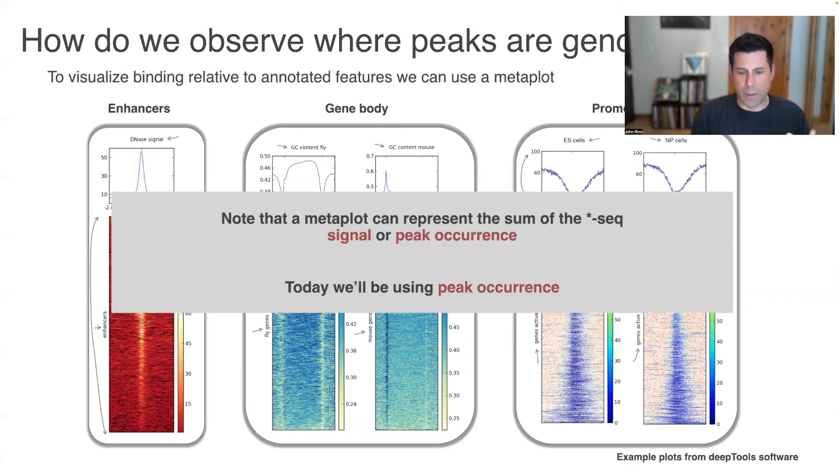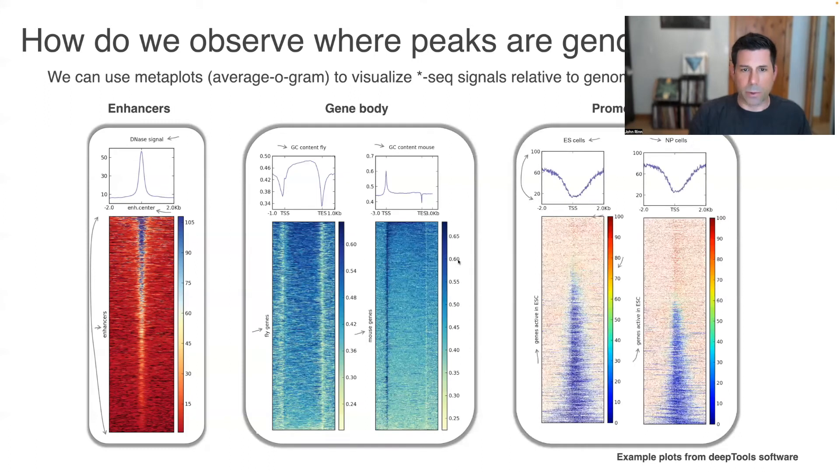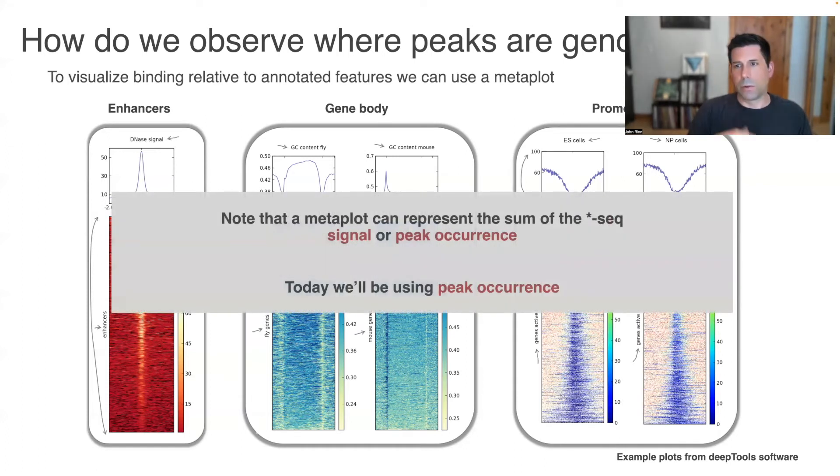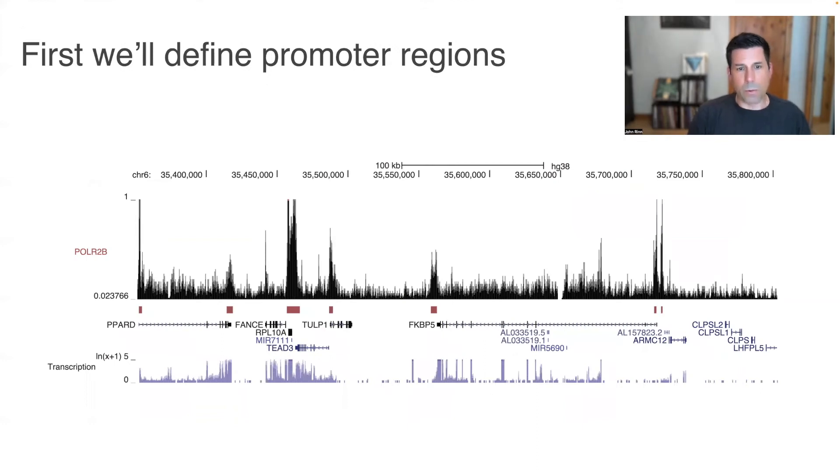We're going to use the example in class where the window is a promoter. Each row will be a promoter, and each column will be a position in the promoter window. We will then use our promoter peak occurrence matrix, which has already told us for a given DNA binding protein, let's say 20,000 chip peaks, where do they overlap in a given promoter window? Then we can sum all those promoters as rows and sum the columns and find the metaplot of that binding.